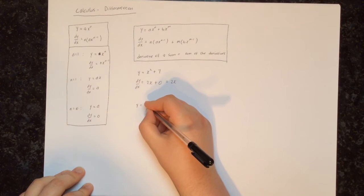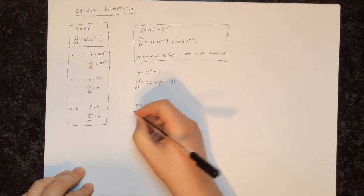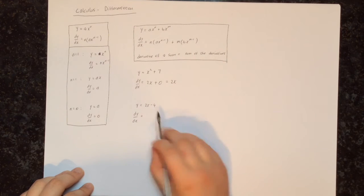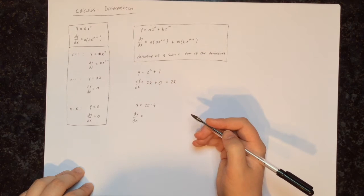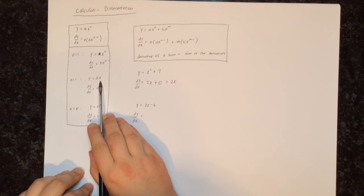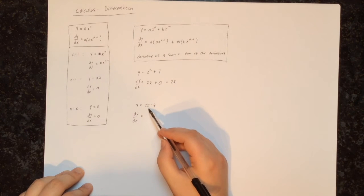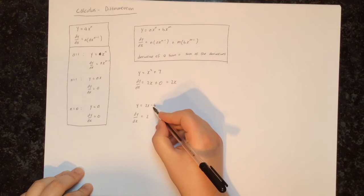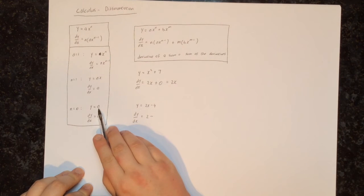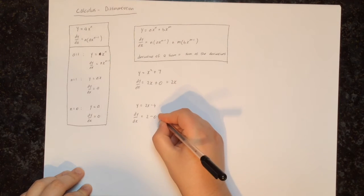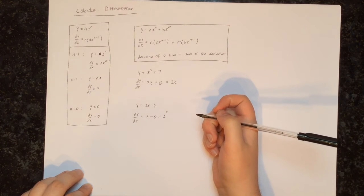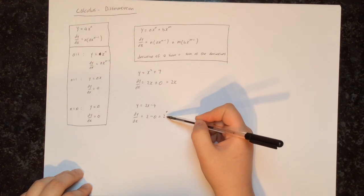Let's say y is equal to 2x minus 4, and we're asked to calculate dy/dx. We take the derivative of each thing independently and subtract. First the derivative of 2x: whenever we differentiate a number times x, the derivative is just that number, so we get 2. Then we subtract the derivative of 4, which is just a constant, so its derivative is 0. This means dy/dx equals 2, because 2 minus 0 is 2.